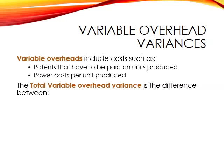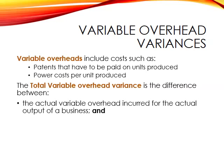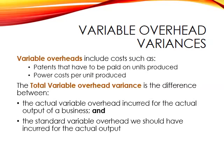The first variance we can calculate is called the total variable overhead variance. This is the difference between the actual overhead incurred and the standard overhead we should have incurred for our actual output.